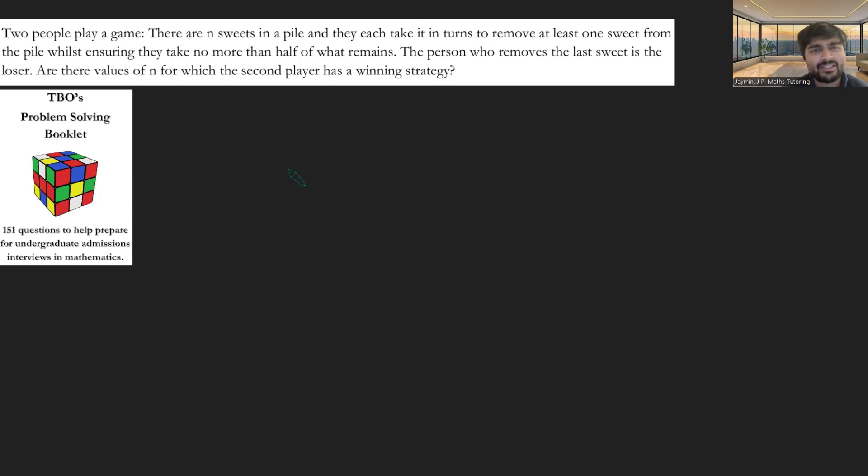Let's clarify this with an example. Let's say we have N is 5, so we have five sweets there in a pile. Let's say it's my go first. I can choose either one sweet to remove or two sweets to remove, because I'm not allowed to take more than half. So half of five would be 2.5, so I wouldn't be allowed to take three because that's bigger than 2.5. Maybe I'd take two sweets away. Then it's the other person's go, and because there are three sweets now left, they can only take one sweet away. So they'd take away one sweet, and then I'd have to take away one sweet, and then they'd take away the last sweet, and then they would lose.